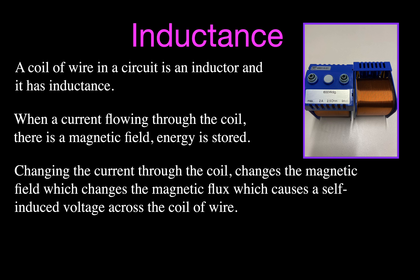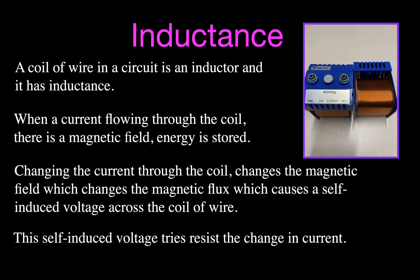If you change the current through the coil, that changes the magnetic field, which changes the magnetic flux, which causes a self-induced voltage across that coil of wire. That self-induced voltage tries to resist any changes in current, whether it's increasing or decreasing current through that coil of wire. That's what inductors do.